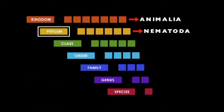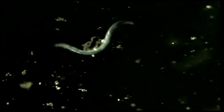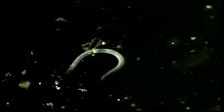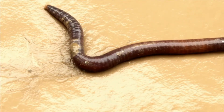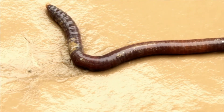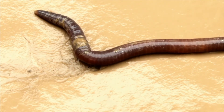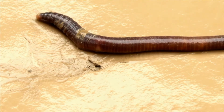Nematoda are roundworms. They have a round body and a complete digestive system with two openings: a mouth and an anus. Roundworms are plentiful in soil. Finally, Annelida have a similar body shape to roundworms, but their body is segmented both inside and out — they are called segmented worms — and they also have a complete digestive system.